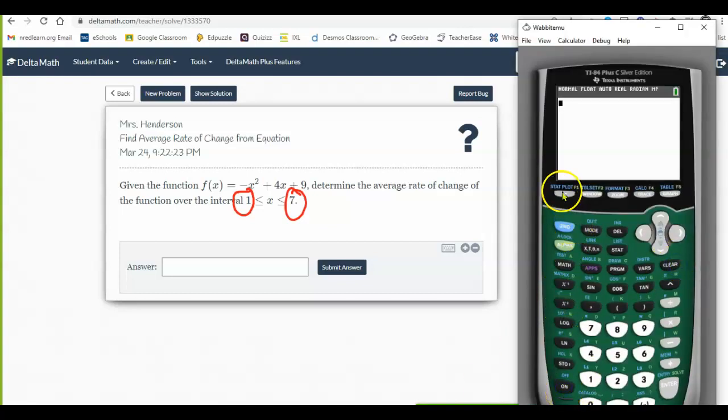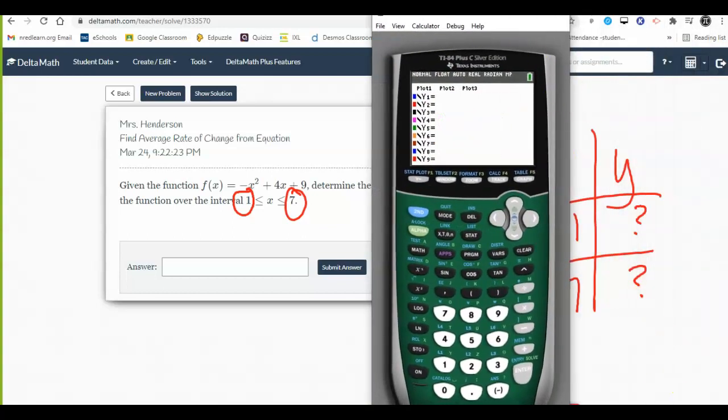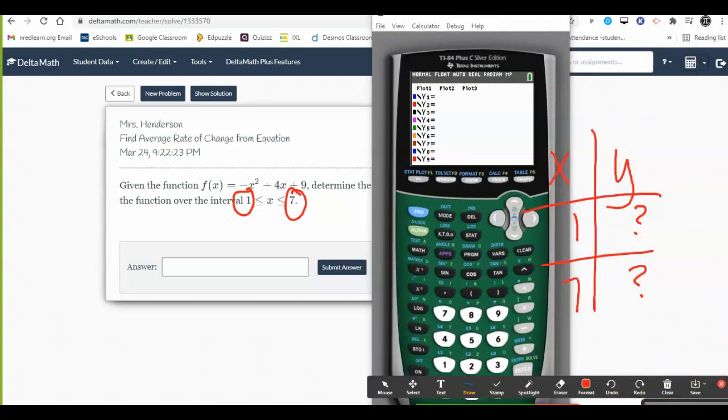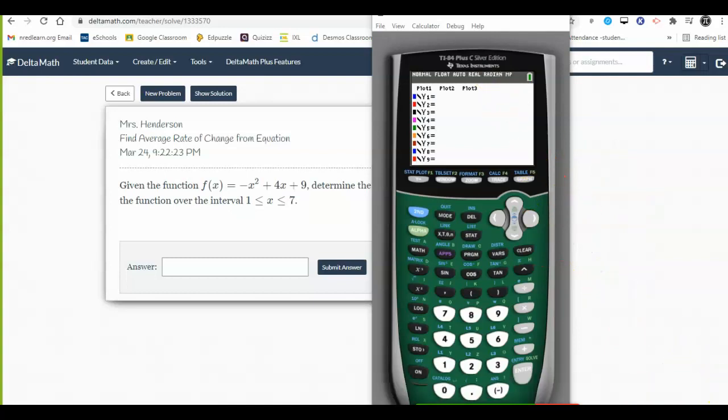I'm going to enter my function into the y equals button. My function is negative x squared plus 4x plus 9. So I go to my table, second table, and I grab those two numbers.